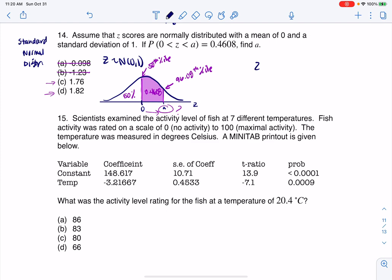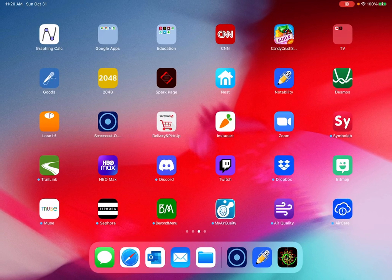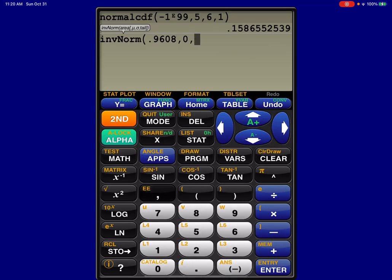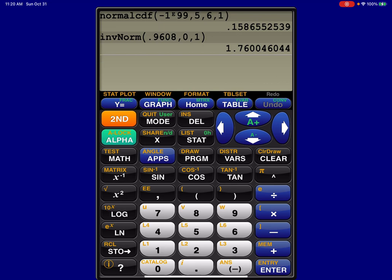So let me change colors here. So my z would be inverse norm, and the percentile I'm dealing with is 0.9608, and then 0, 1 for that mean and standard deviation, respectively. So I'm going to do inverse norm, 0.9608, 0, 1, and we get 1.76.